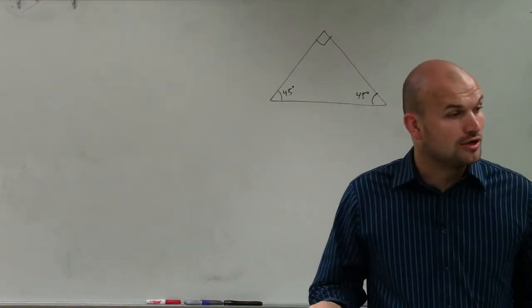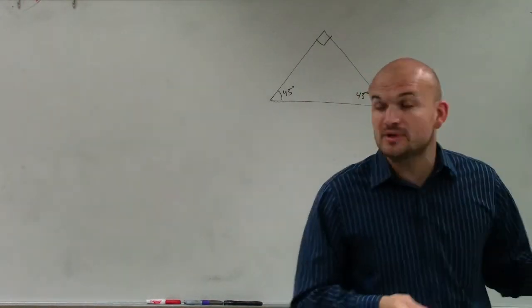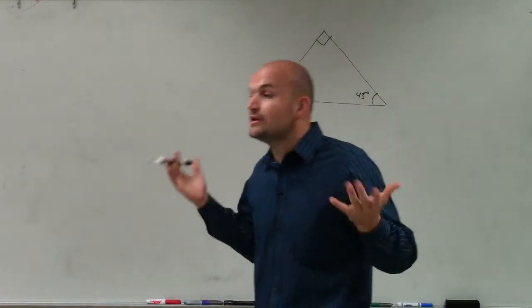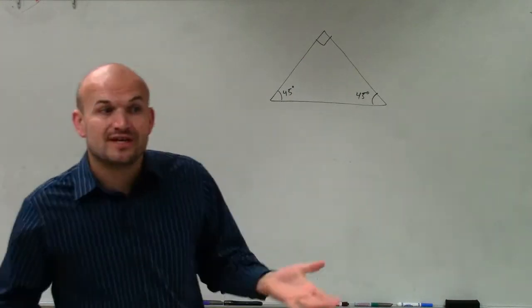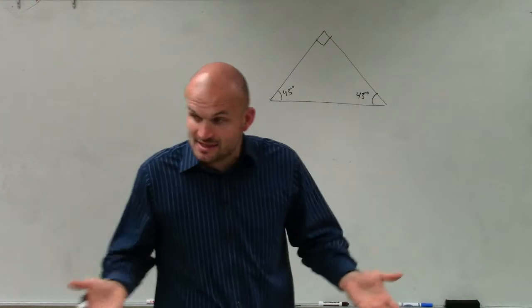So an acute triangle has all acute angles. Obtuse is going to contain at least one obtuse angle. Equally angular means all the angles are equal, which in this case for a triangle, guys, the only way that all the angles can be equal is if they're all 60, 60, 60.